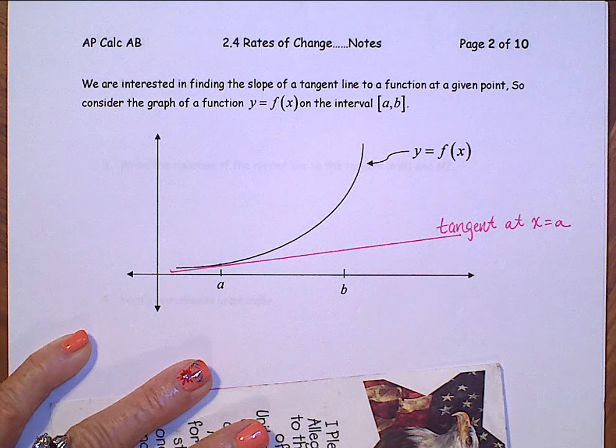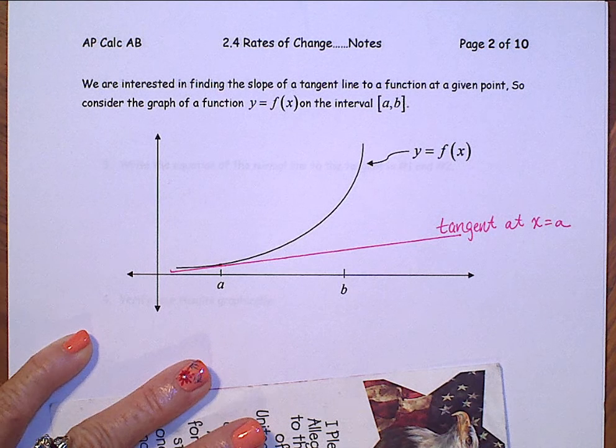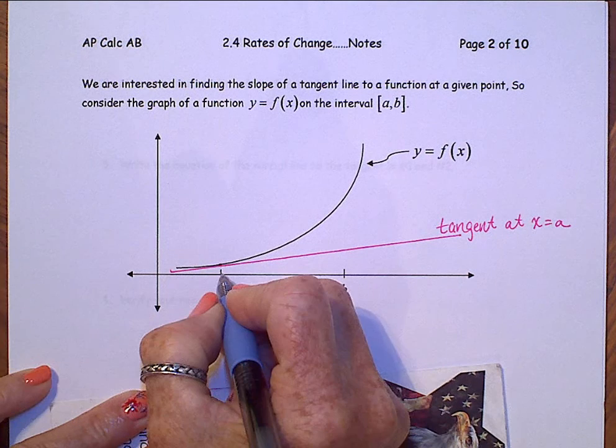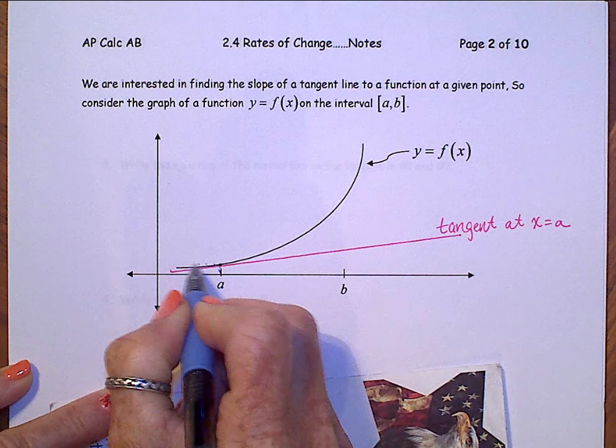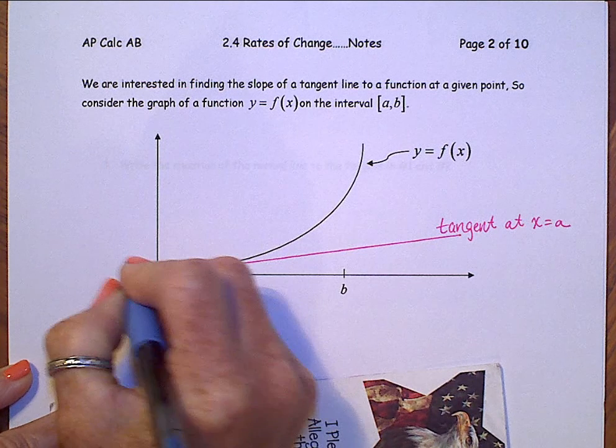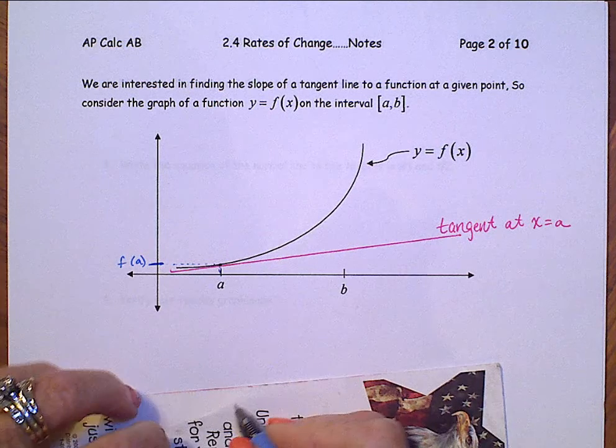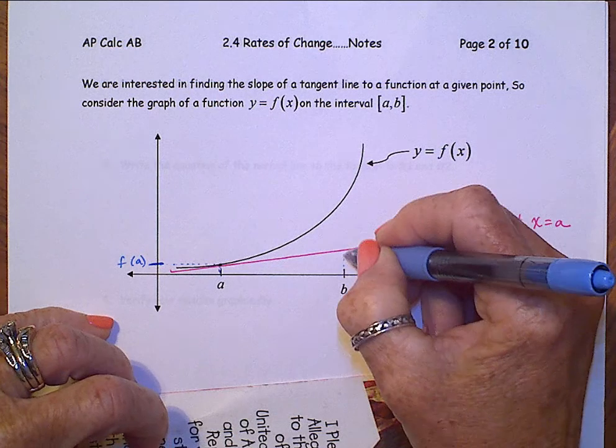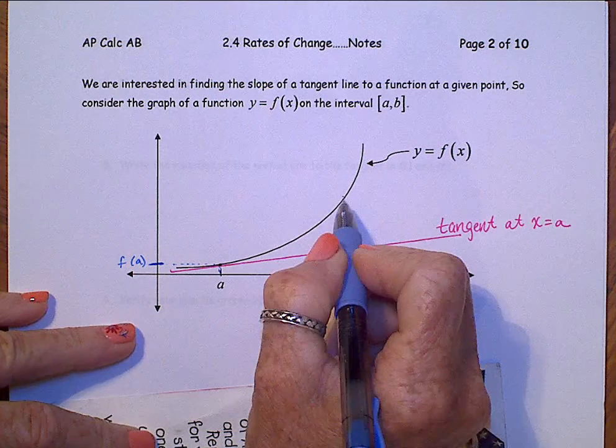At x equals A. Let's label a few things here. If we take this A up to where it hits the curve and line that over to the y-axis, that y value is f of A. And take this B, line that up to where it hits the curve.